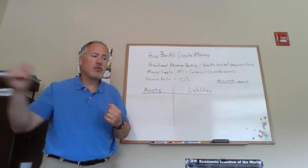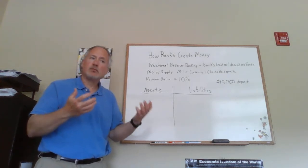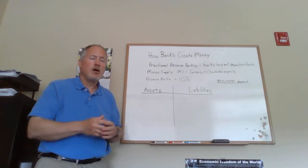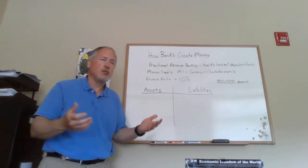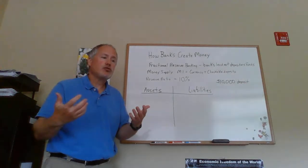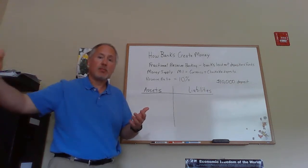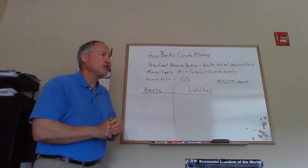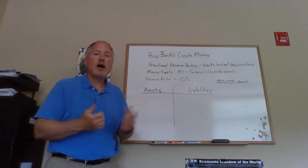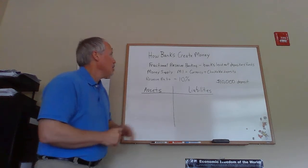Banks lend the rest out, which allows them to make loans to people who want to start businesses, couples who want to buy a house and get a mortgage, or people buying a car who get a car loan. By charging interest on those loans, banks make money, which allows them to pay interest on customer deposits and also earn some profit for themselves.